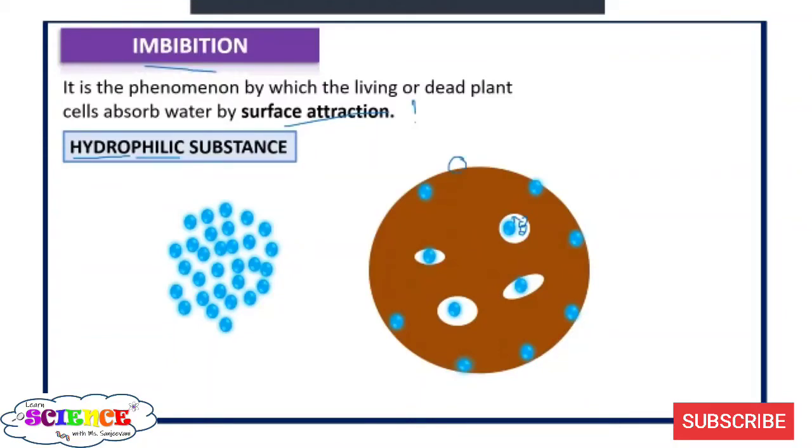This is one of the important reasons which causes absorption of water by roots. Root cells also have cell walls which are composed of cellulose. So these water molecules before entering in the cell, it first gets absorbed on the surface of the root cells and then they gain entry.